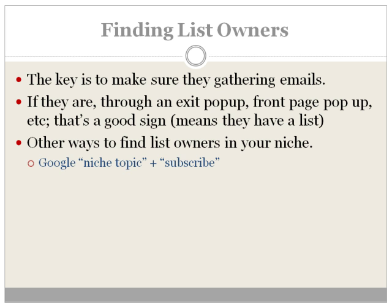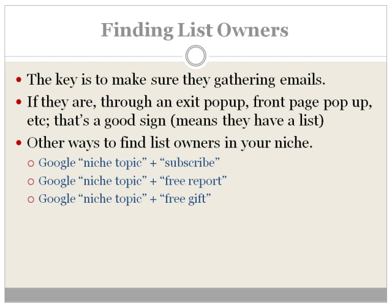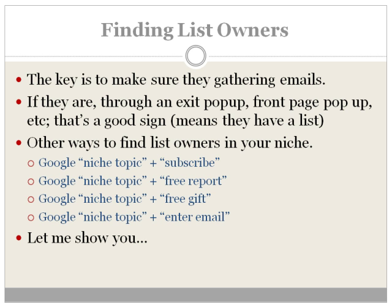Here are some other ways to find list owners in your niche. You can go to Google.com and type in your niche keyword plus, in quotations, the word 'subscribe.' What we're trying to do is find people who have websites in a specific niche topic that have the keyword 'subscribe' on their website. Usually if they have 'subscribe,' 'free report,' 'free video,' 'free gift,' or anything free they're giving away in exchange for an email, that narrows it down and makes it easier to find people through Google who are building a list. Other search ideas include niche topic plus 'enter email' and more.